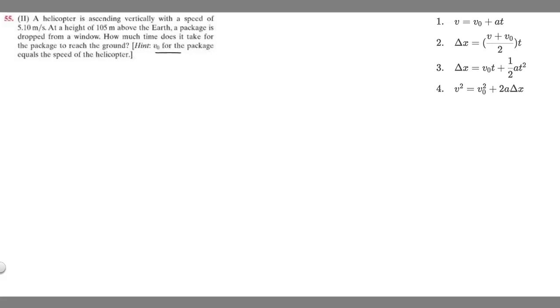We're told V sub zero for the package equals the speed of the helicopter. Before we start the problem, let's write down what's given. V sub zero for the package equals the speed of the helicopter, which is ascending vertically with a speed of 5.1 meters per second. So V sub zero is going to be 5.1 meters per second.